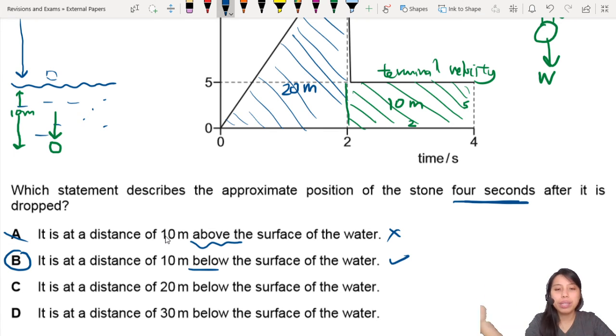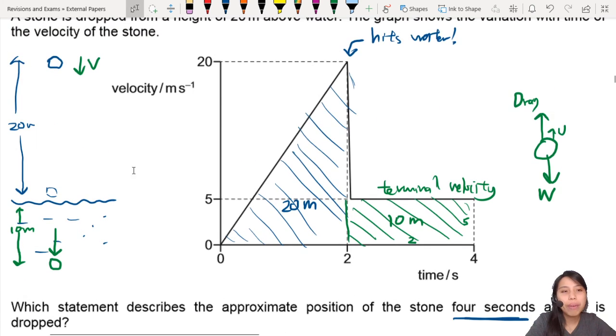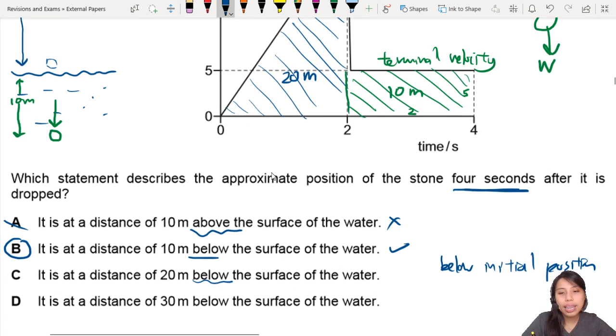It is at a distance 20 meters below the surface of the water. No, below the surface. This is a reference point. If you say below initial position, means from the time when you let go of the stone. If you look at the picture on the top, right? If below initial position, then that would be 30 meters in total. So I think that's what D is trying to get at too. So this is below the surface? No. So I guess the best choice is B.